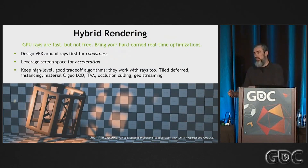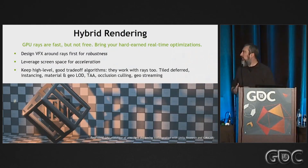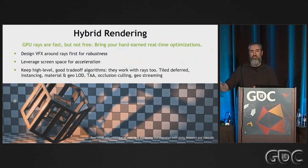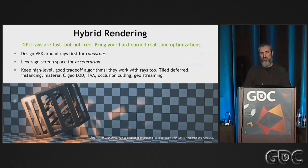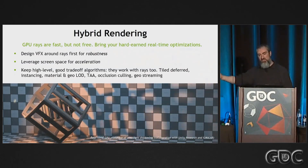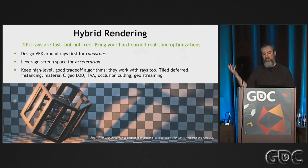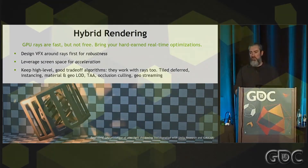TAA, geometry streaming, occlusion culling — these are all compatible with ray tracing. So we can keep these kinds of speed-ups, but then we can use rays to get the robustness and quality.